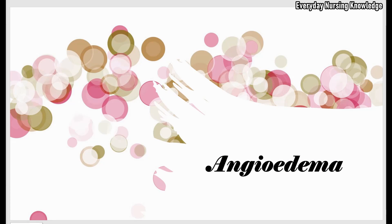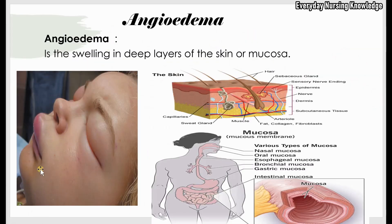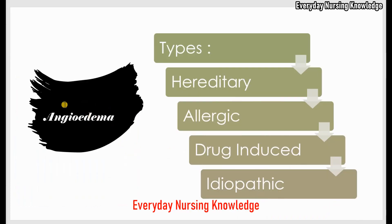Welcome to everyday nursing knowledge lectures. Today we will learn about angioedema. Angioedema is the swelling in deep layers of the skin or mucosa. Mucosa is the tissue that lines the internal organs and body. So swelling happens in deep layers of the skin and in the mucosal membrane.